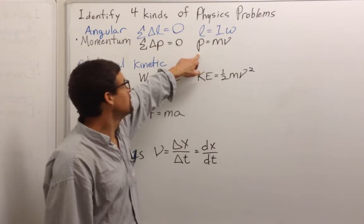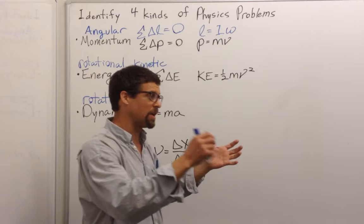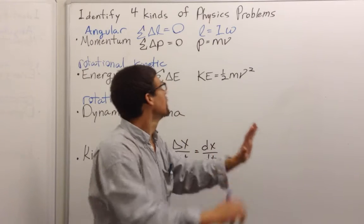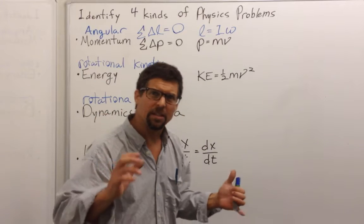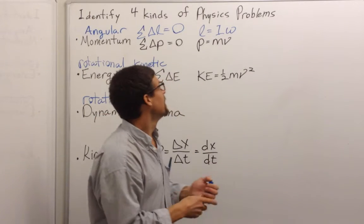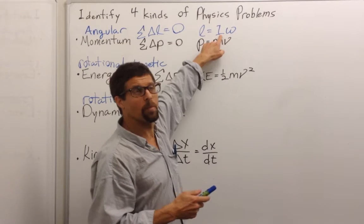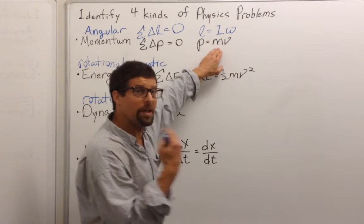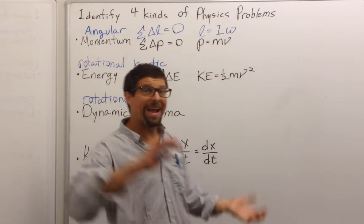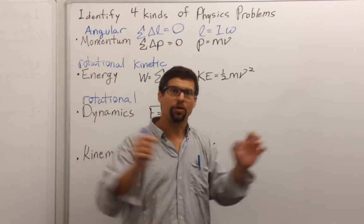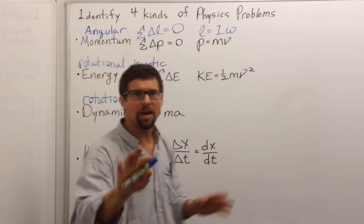So momentum, mass times velocity, can be thought of as how hard it is to stop something from moving. Angular momentum can be thought of as how hard it is to stop something from turning, if it has a lot of speed, spinning-wise, or if it has a large moment of inertia. For linear motion, inertia is just mass, but for angular motion, the moment of inertia is mass and radius, how big it is, which we'll talk about in a moment.